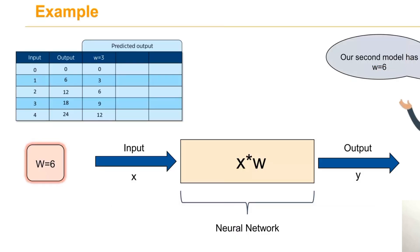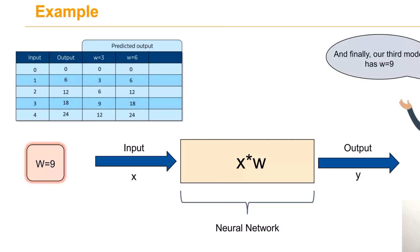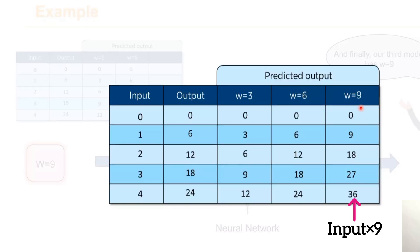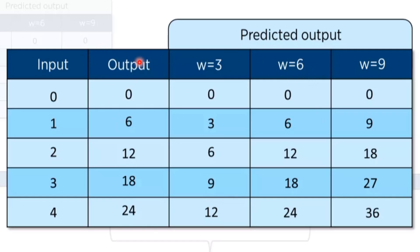For the second model we set weight w = 6 and compute the products: we get 0, 6, 12, 18, 24. For the third model we set w = 9 and compute the updated output table. So when w = 3 we get one set of predicted outputs; when w = 6 we get another; and when w = 9 we get yet another. As humans we can clearly see that w = 6 gives the required output.